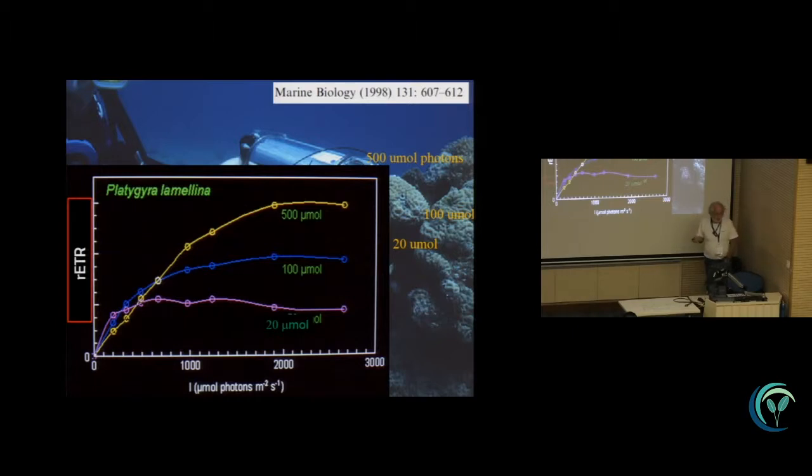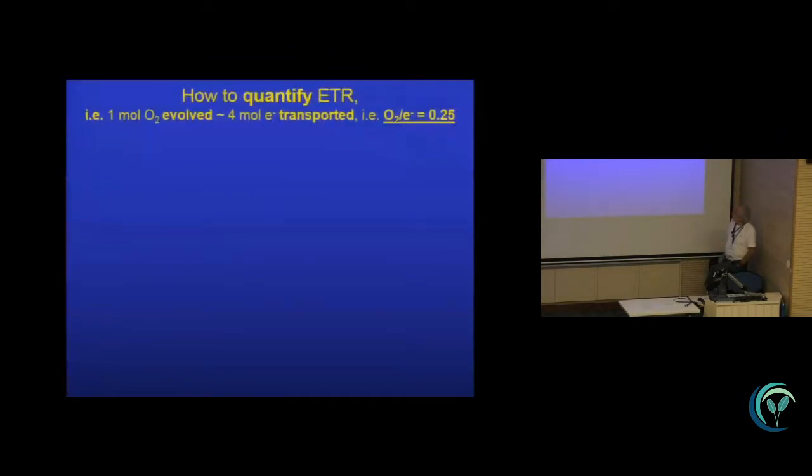So the first question, actually, we thought about is how can we quantify these electron transport rates, not to be relative, but to be true rates. How can we make sure that four moles of electrons will be the result of one oxygen split out of water? In other words, to quantify it, we should expect an oxygen to electron transport rate ratio, a molar oxygen to electron transport ratio of 0.25.